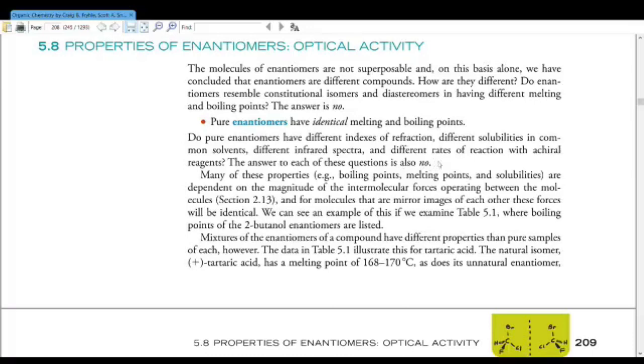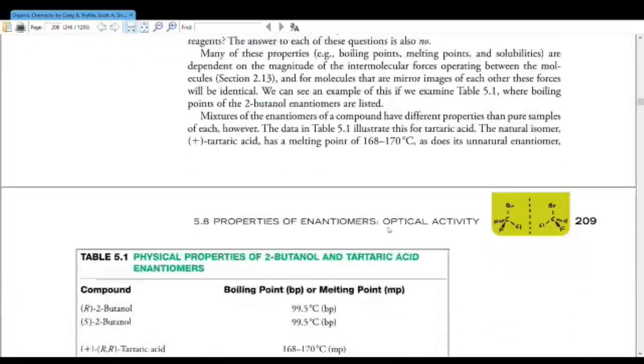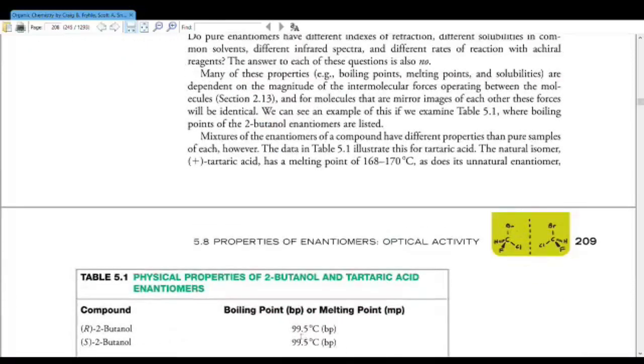Do pure enantiomers have different indices of refraction, different solubilities in common solvents, different infrared spectra, and different rates of reaction with achiral reagents? The answer to each of these questions is also no. So you would not be able to separate enantiomers on the basis of any of these things. Many of these properties are dependent on the magnitude of the intermolecular forces operating between the molecules, and for molecules that are mirror images of each other, these forces will be identical. You can see down here the boiling points are the same.